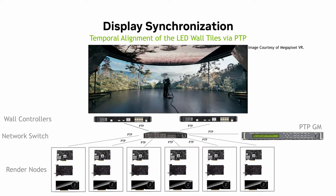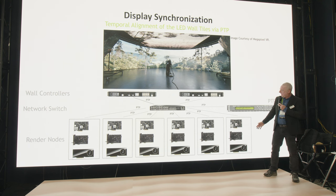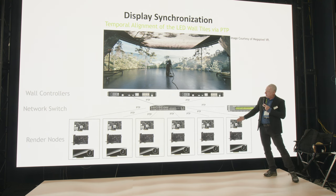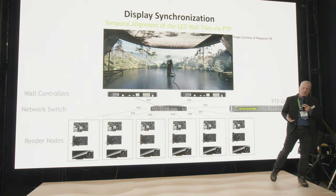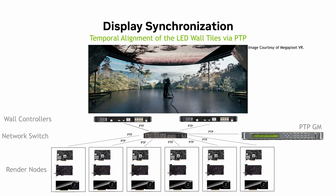Here's how all the pieces fit together. From top to bottom: we have the LED wall, the LED wall controllers that now support SMPTE 2110 — like the Helios controllers from Megapixel VR — a network switch from NVIDIA, Cisco, or any vendor, and then the render nodes. Each render node consists of a GPU for rendering the wall, the NIC or DPU handling network and PTP, and a third component: a GPU synchronization card we call Quadro Sync.